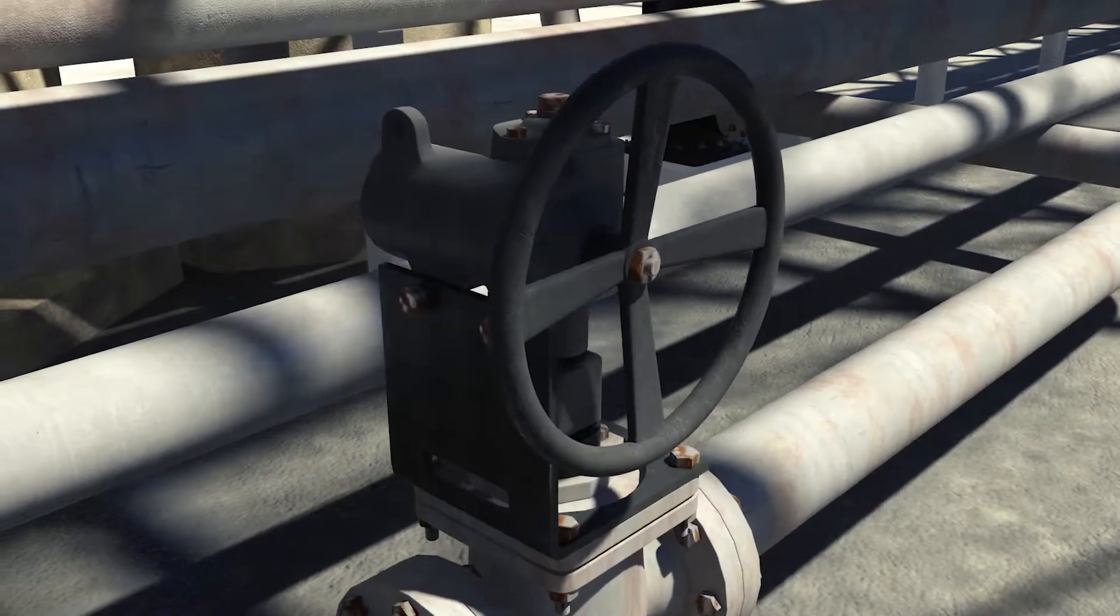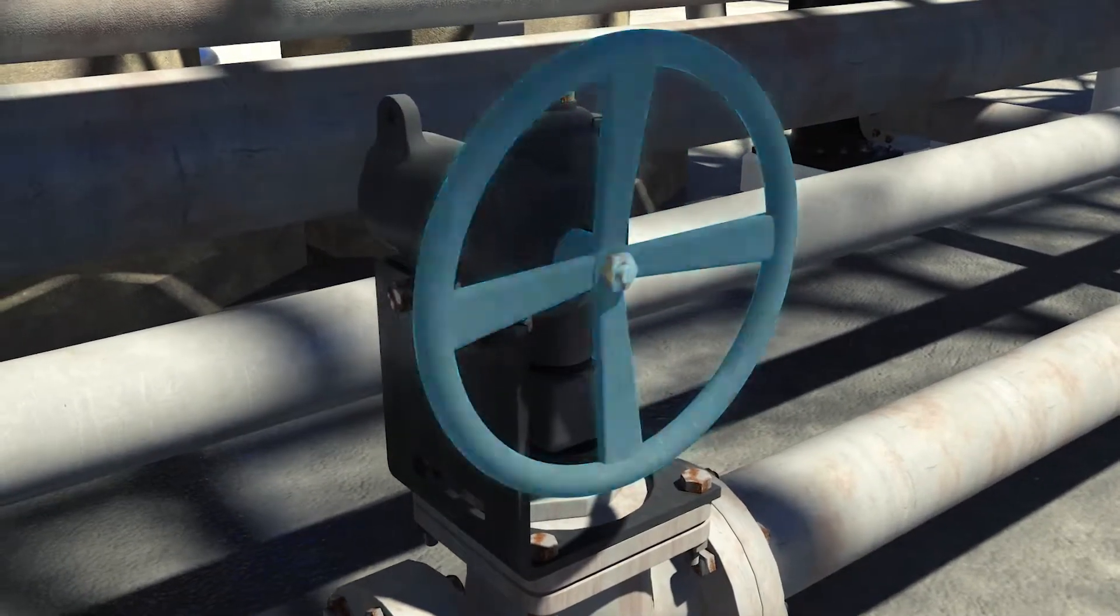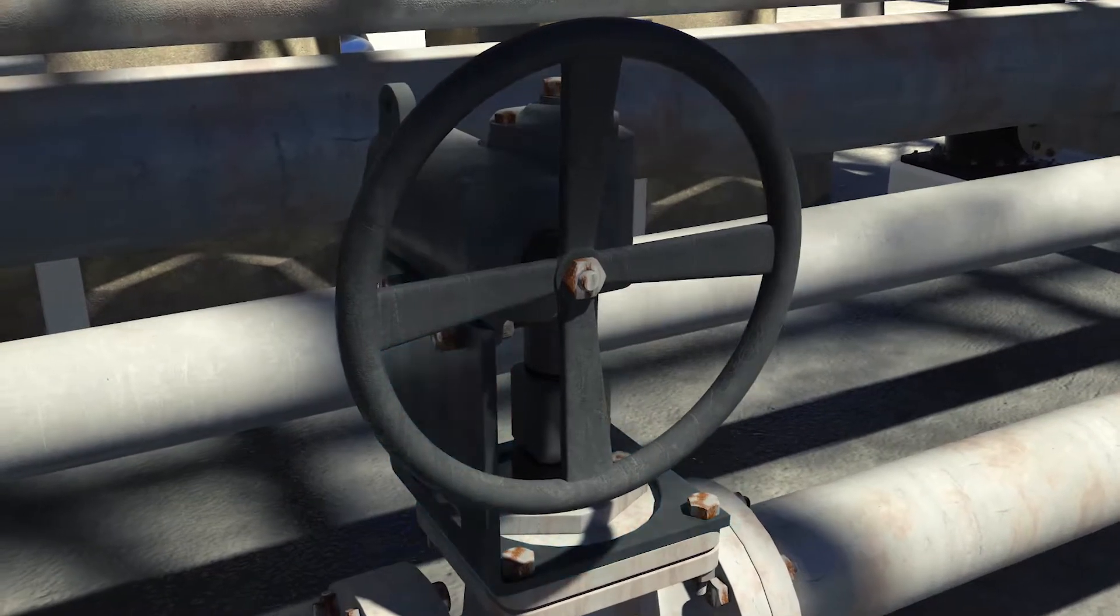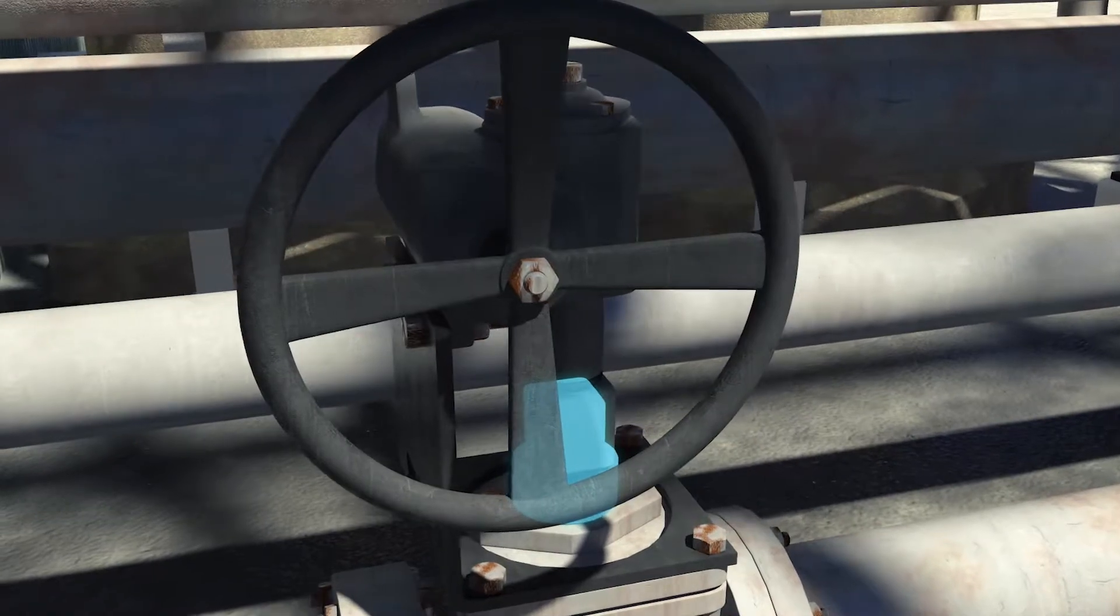That plug valve was operated manually. A hand wheel was connected to a piece of equipment called a gearbox by a support bracket. The gearbox uses gears to make it easier to turn the valve stem into the open or closed position.